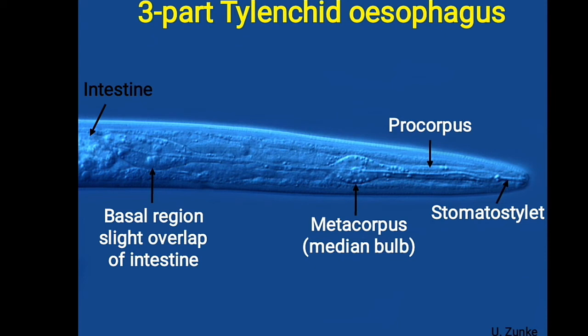Next, about the three-parted tylenchid esophagus: it has a procorpus, a metacorpus, and a basal region. The procorpus is narrow, the central median bulb is a broad muscular region, followed by a narrower isthmus, and then a gland lobe as the basal region. In the Adenophorea, the aphasmid group, there are only two regions: an anterior procorpus which is narrower, and a postcorpus which is a broad region. A cardia is also present — it is the esophageal-intestinal valve which prevents regurgitation of food.